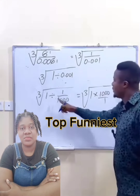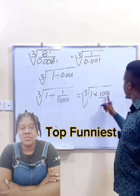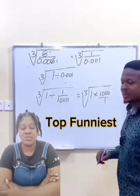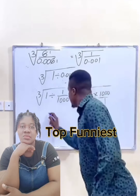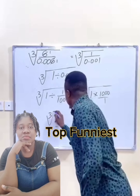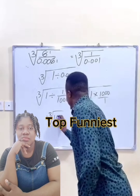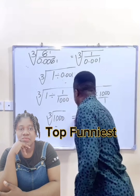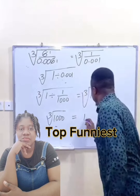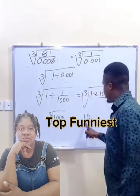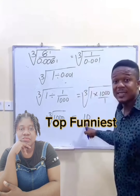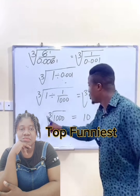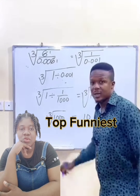When you see division, change to times: 1 times 1,000 is 1,000, divided by 1 is still 1,000. So we have the cube root of 1,000. And the cube root of 1,000 is simply 10, because you need to multiply 10 three times to get 1,000.